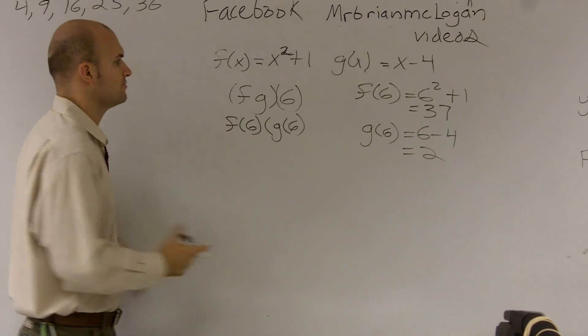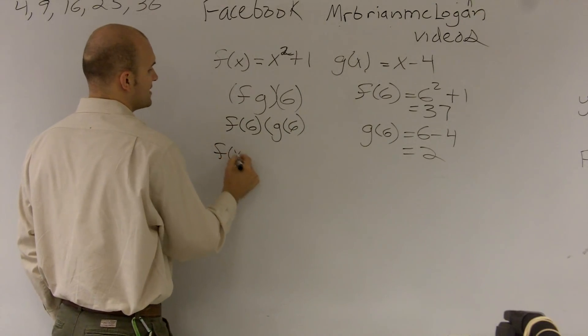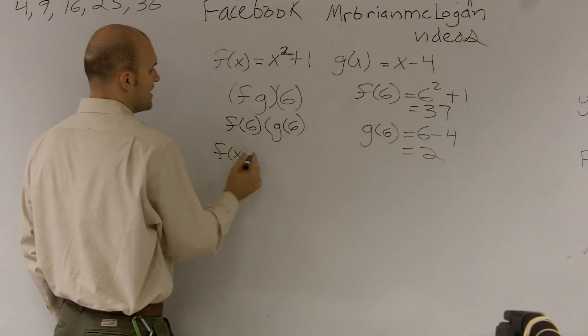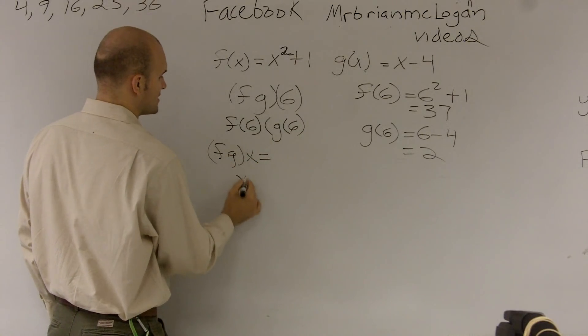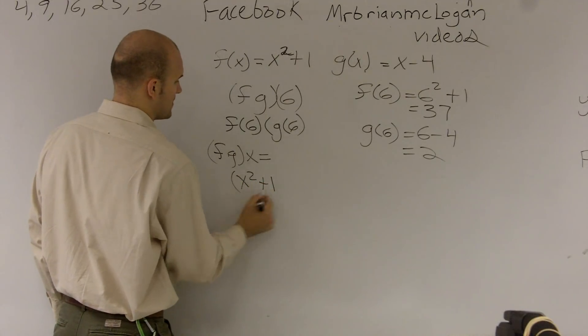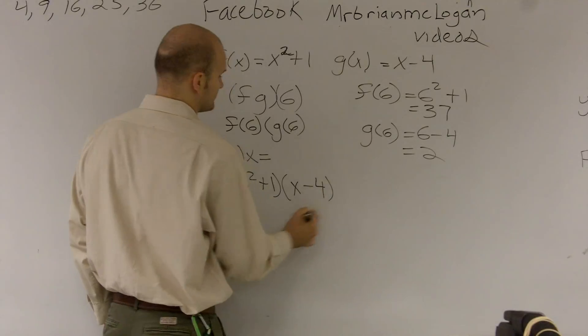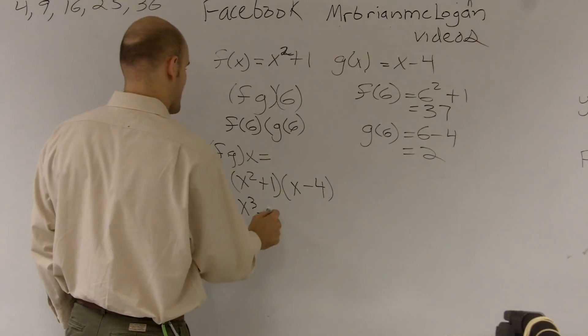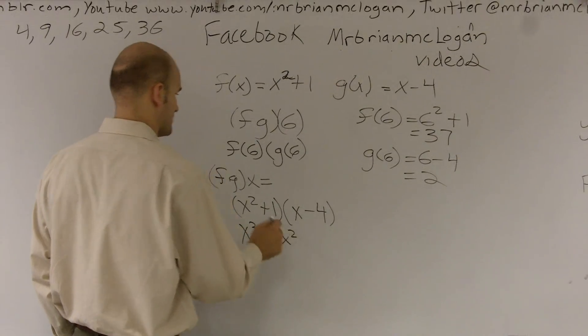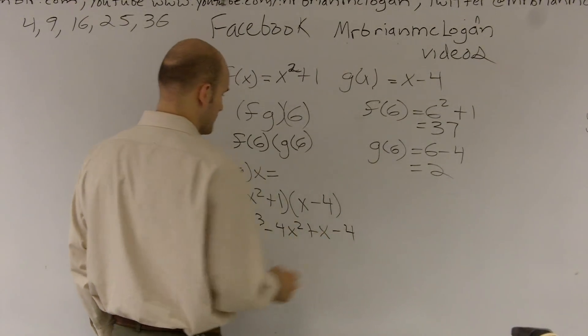Or the other thing you could also do is we could also just multiply these two functions. So you could say f of x, or f of g of x. Well, that equals x squared plus 1 times x minus 4. And we multiply this. This becomes x cubed minus 4x squared plus x minus 4.